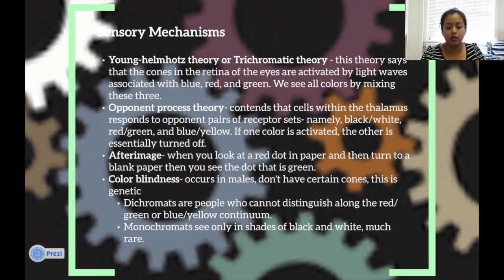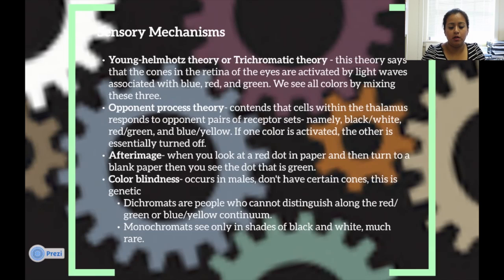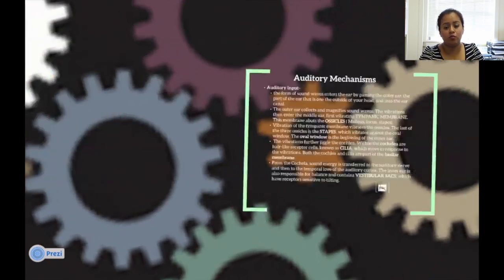Color blindness occurs in males who do not have certain cones, and this is basically genetic. Dichromats are people who cannot distinguish along the red-and-green or blue-and-yellow continuum. Monochromats see only in shades of black and white, which is more rare.